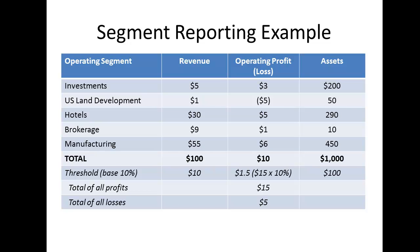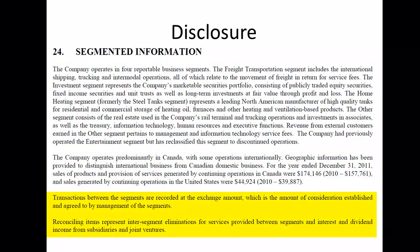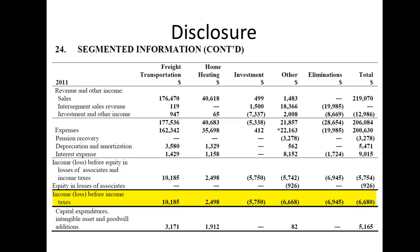Now let's turn our attention to the disclosure itself. Here's an example of the segment disclosure for a company I'm involved with. The first paragraph identifies the segments. The second paragraph provides geographic disclosure. The third and fourth paragraphs disclose how the intercompany activities have been reported. Next, we have the operating results disclosed by segment. Notice that the company has three reportable segments: freight transportation, home heating, and investment. The other segment contains a hodgepodge of immaterial business activities and the corporate administration function. The elimination column and the intersegment sales revenue row are very important because these enable the schedule to tie directly to the face of the financial statements. The schedule takes the income down to income before taxes. Allocating taxes between segments would be a nightmare and is not required.